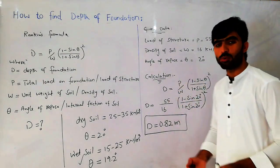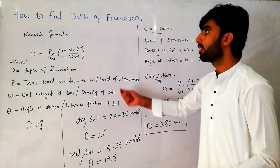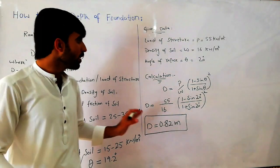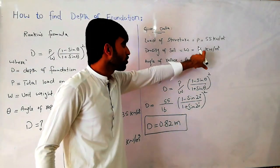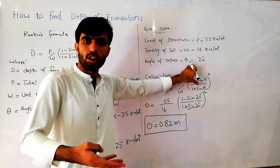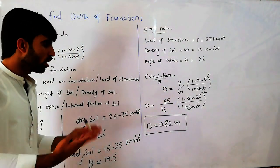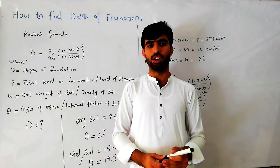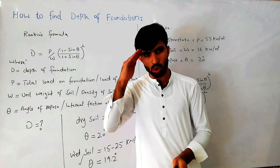So this is Rankine's formula which I have discussed and this is the method to find depth of foundation. For different types of sites you can change the values — the angle of repose should be changed for different soil types. If you have any questions about this video, let me know in the comments and I will try to reply. Thanks for watching, see you in the next video. Goodbye!